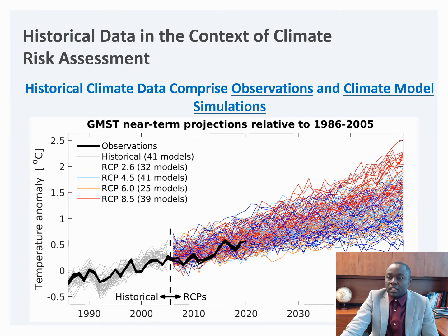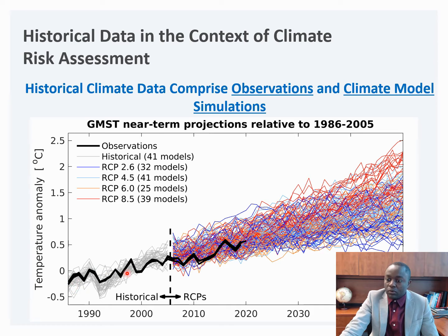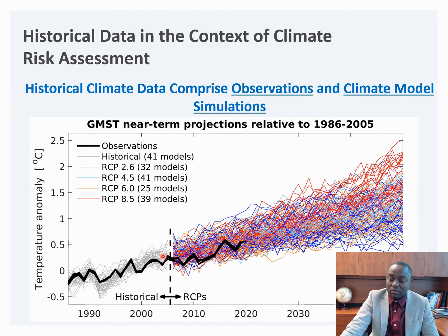In the context of a climate risk assessment, historical climate data comprise of observations and climate model simulations. For example, in this figure, the black bold line represents climate observations up to the period of 2020, while the gray small lines represent historical simulations from climate model outputs. So it is important to distinguish this: when we talk about historical climate data, we are actually talking about observations as well as climate model output during the historical period.